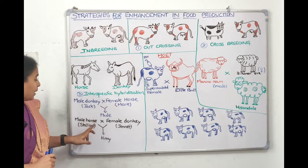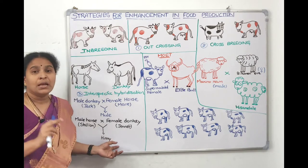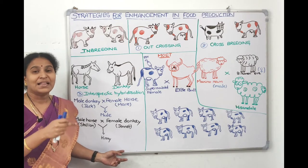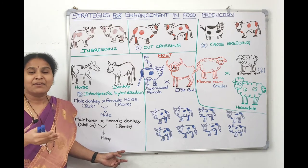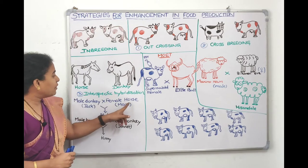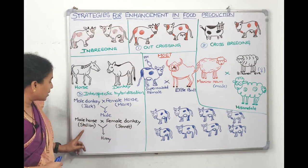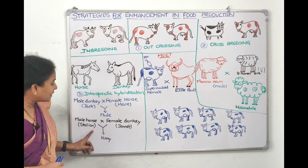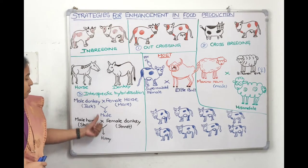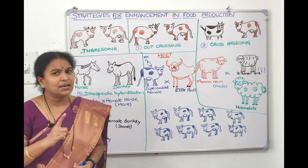If the male is a donkey and the female is a horse, we get a mule. If the male is a horse and the female is a donkey, we get hinny. The male donkey is called jack, the female horse is called mare — jack crossed with mare produces mule. The male horse is called stallion, the female donkey is called jennet — stallion crossed with jennet produces hinny.